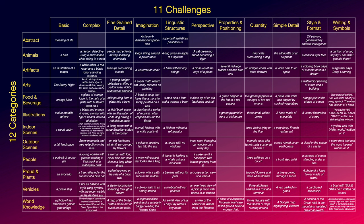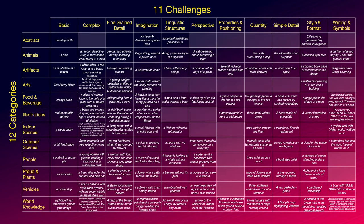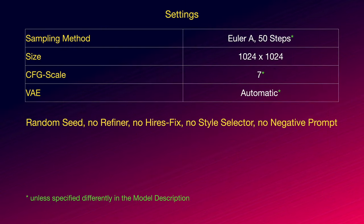5000 images overall. In the next step I evaluated the image quality and details as well as the prompt accuracy for each image and each model, and put the results into a score matrix which gave me a good overview on the strengths and weaknesses of each model. Finally I assigned each model to a 5-tier matrix based on its scores. For rendering the images I used Automatic1111 with Euler A 50 steps, 1024x1024, CFG scale of 7 and automatic VAE. Whenever some different settings were recommended in the model description I used those values.